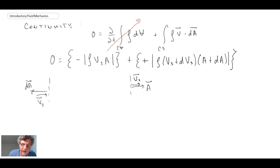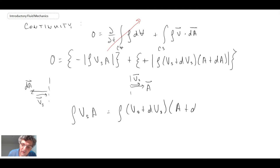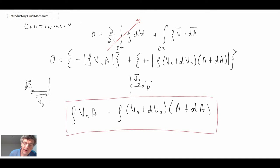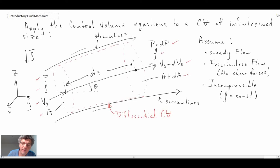We can then simplify and rearrange to get a useful relationship from continuity. We're going to park that result and come back to use it in a few minutes as we look at the momentum equation. Next, we're going to apply the momentum equation in the direction of a streamline — that means applying momentum in the direction of S.